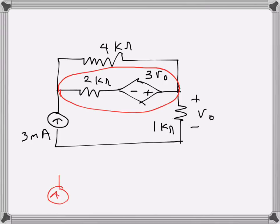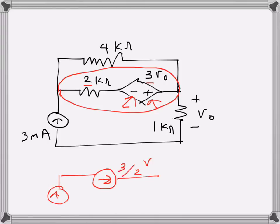So let's do that. This is a current source here, and the direction of the current source will be to the right because the source polarity is plus here and minus here. The value will be 3 over 2 V0, and the unit will be milliamps because this is milliamps and the resistances are kilo ohms.